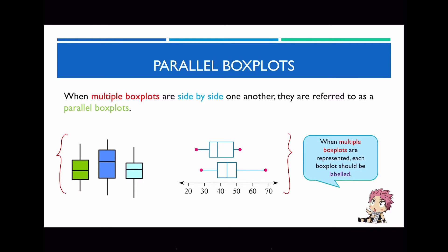As you can see for both of these examples, each of their respective box plots don't actually have a label. So for instance, if this was about test scores, the x-axis should always have a label on it. But in addition to that, each of these box plots should have a little title next to them — for instance, this could be for class A, which is C team, and class B, which is T team. So make sure when you draw parallel box plots that you include the label next to them.